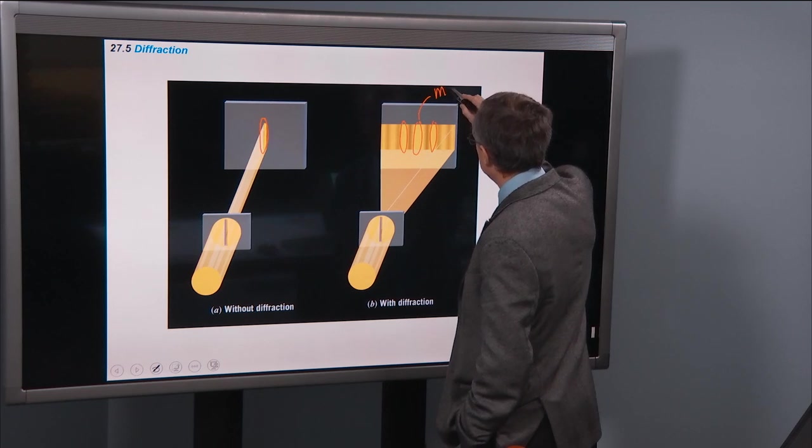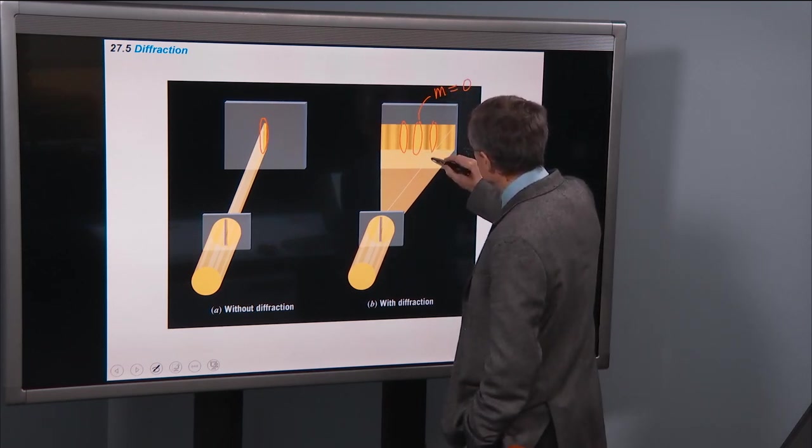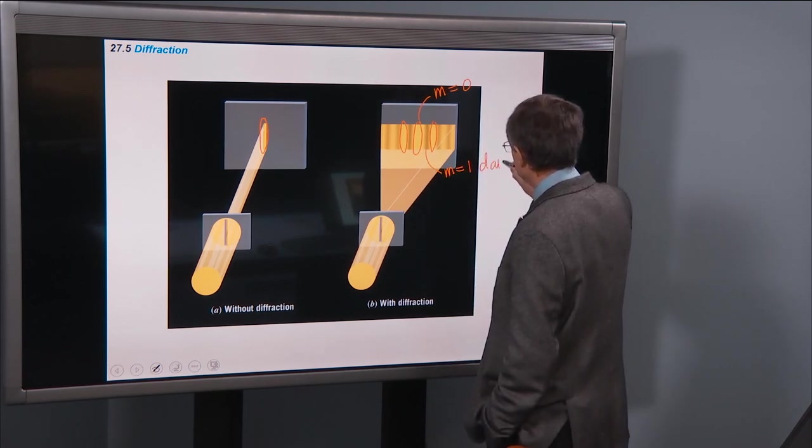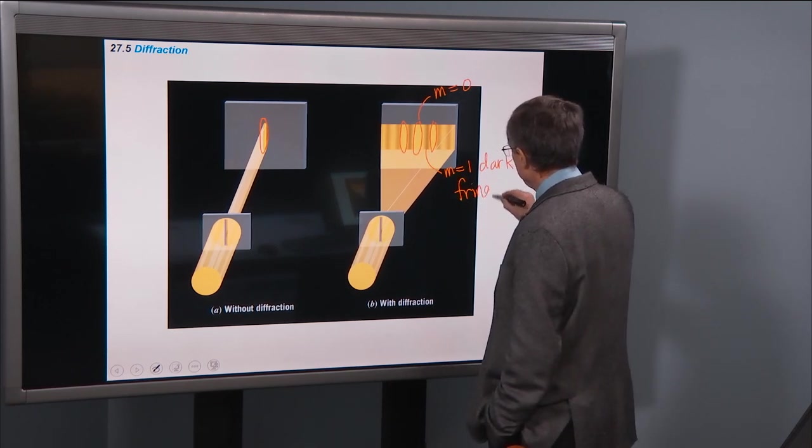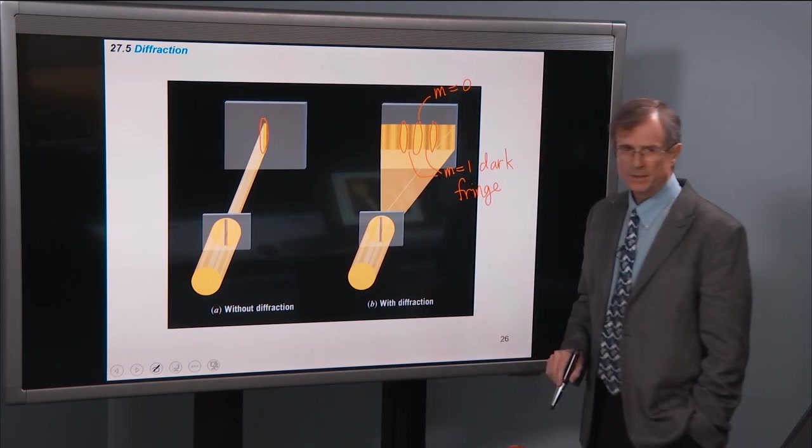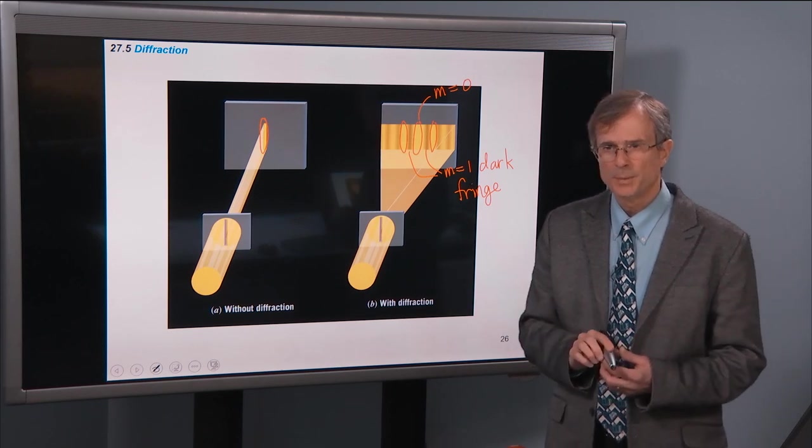So this will be the M equals zero bright fringe. And this is the M equals one dark fringe. And what we're going to actually focus on are these dark fringes. It turns out they're easier to deal with than the bright fringes for this diffraction pattern.